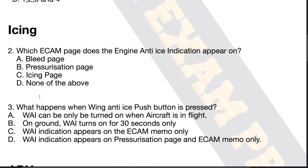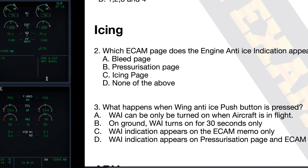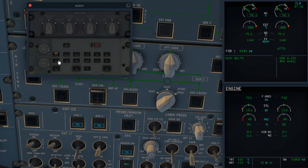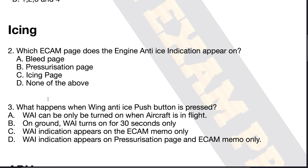So, which ECAM page does the engine anti-ice indication appear on? The answer is not bleed page, not pressurization page. There is no icing page — we have no icing page. It's only engine, bleed, pressurization, electric, hydraulic, fuel, flight controls, wheel, door, conditioning, and APU. We do not have an icing page. So the answer is option D, none of the above.